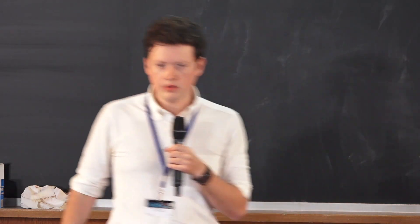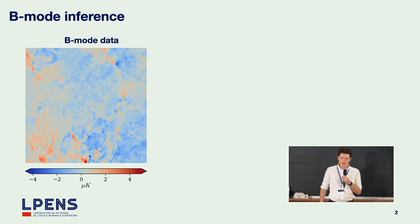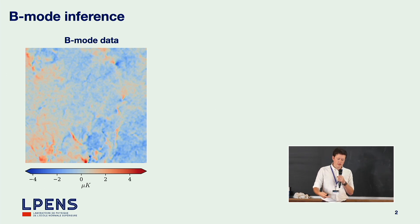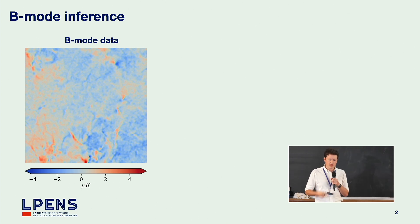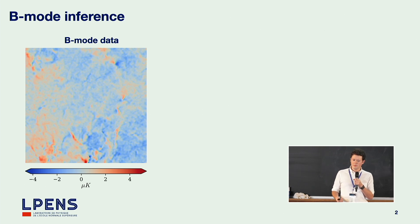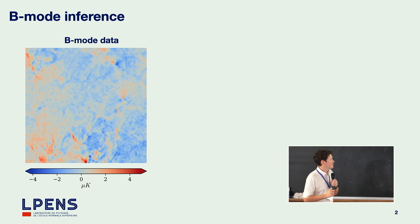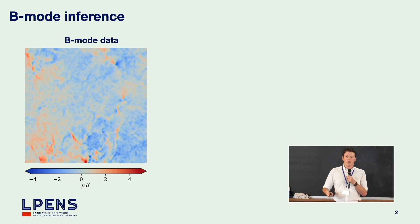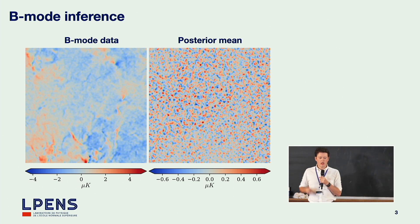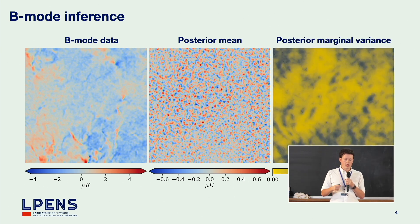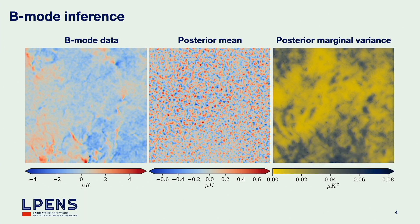I'll start with the results. This is a patch — a bicep-like patch of data dominated by foregrounds. We want to see the underlying B-mode signal. In this work we actually use both E and B-mode simultaneously, but I'll just show the B-mode. Using our high-dimensional likelihood-free inference scheme, we're able to estimate the mean of the posterior distribution for every pixel of our B-mode signal and also the posterior marginal variance for every pixel.